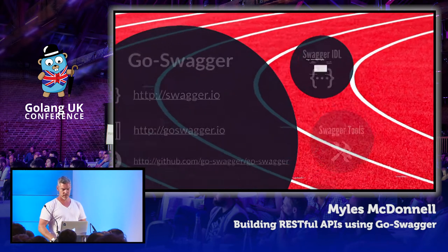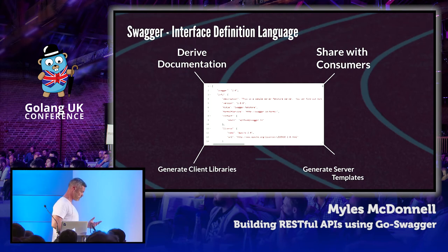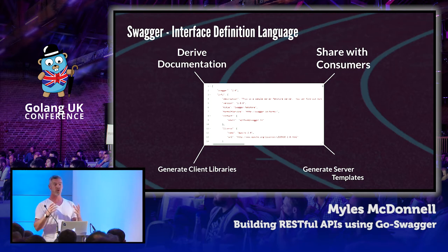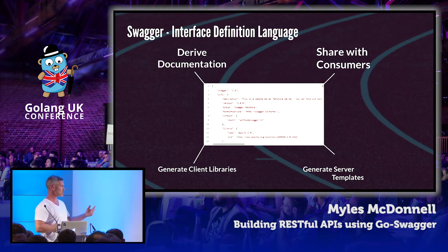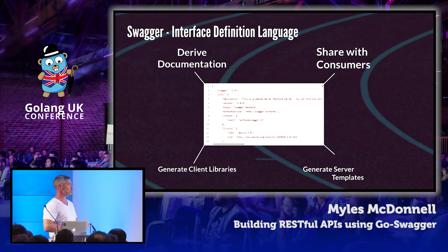What's the value of using an interface definition language? It enables you to think about the contract of your API before you get bogged down with the details of implementing it. From there, as I've mentioned, you can generate client libraries and server templates. You can share that spec with consumers or potential consumers, and then use that to drive other tools in the toolchain or derive documentation and so on.